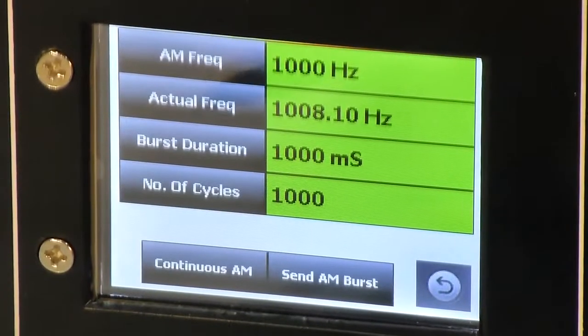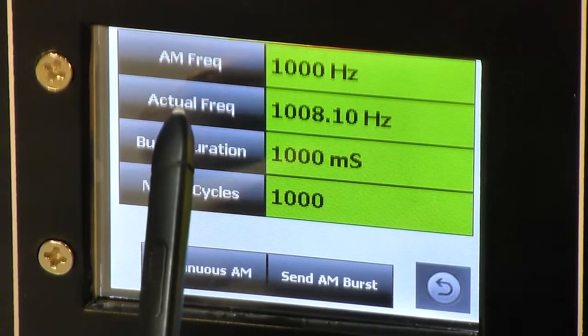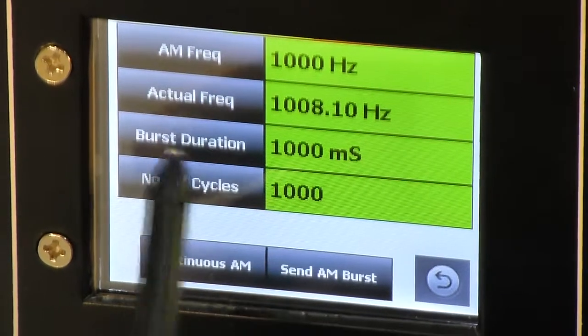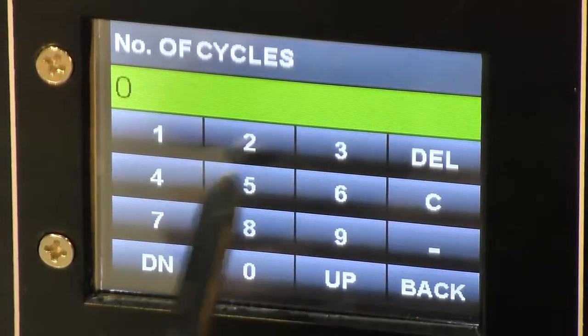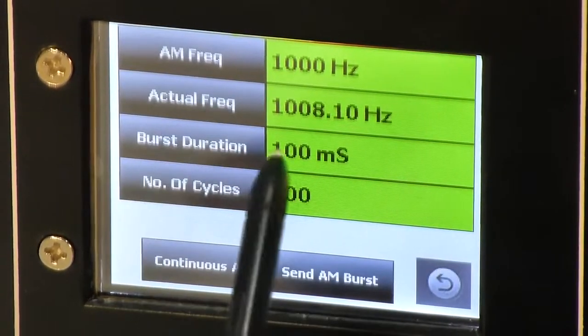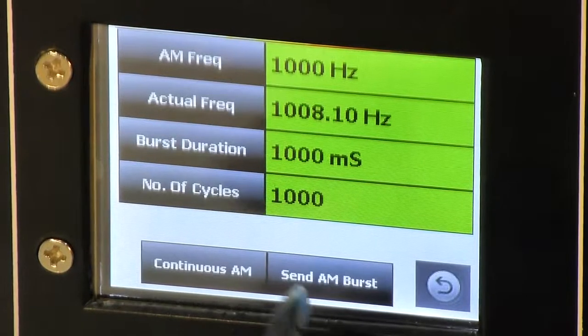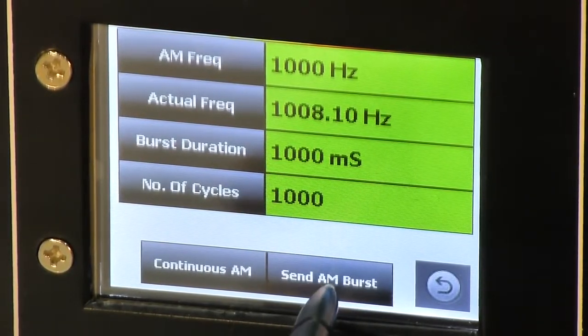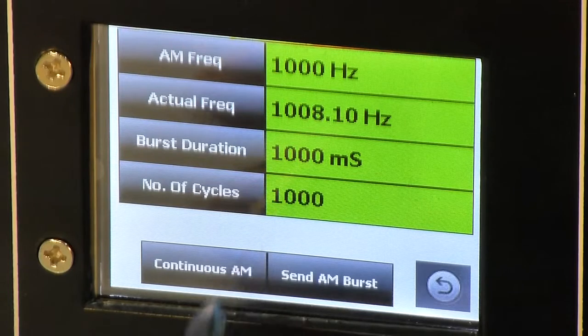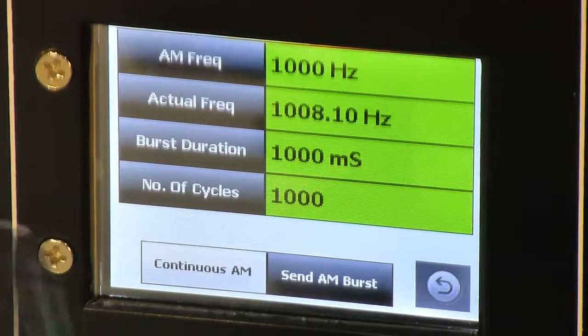On amplitude modulation, there you will see AM frequency, which is used for modulating the output frequency. Then duration and the number of cycles. Number of cycles and frequency will decide the duration. If you change the number of cycles, let's say 10 or 100, the burst duration will also change. Burst duration is used when you click on the send AM burst button. And AM burst will be sent for this particular time period. When you press on continuous AM, output frequency will be continuously modulated with a 1000 Hz sine wave.